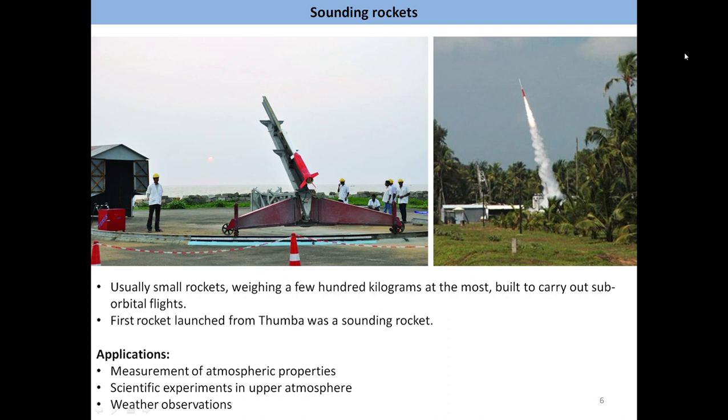Besides orbital launches, rockets are also used to launch payloads for high altitude observations and scientific experiments in the atmosphere. Such vehicles are called sounding rockets. Sounding rockets are usually very small compared to launch vehicles and weigh less than a ton. The first rocket launched from Thumba, Trivandrum on November 21, 1963 was a sounding rocket.